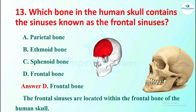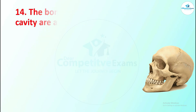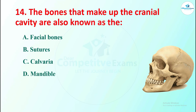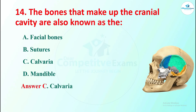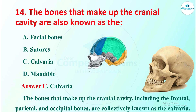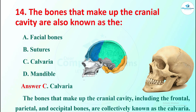Question 14: the bones that make up the cranial cavity are also known as what? Options are facial bones, sutures, calvaria, or mandible. The right answer is calvaria. The bones that make up the cranial cavity, including the frontal, parietal, and occipital bones, are collectively known as the calvaria.